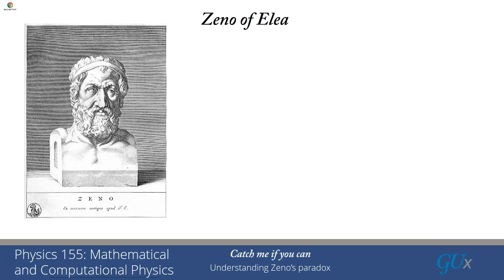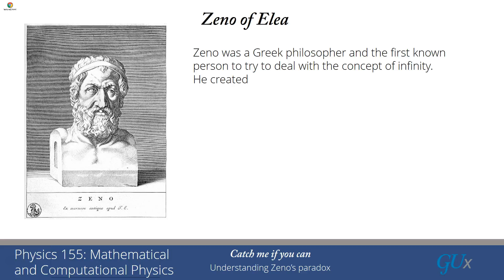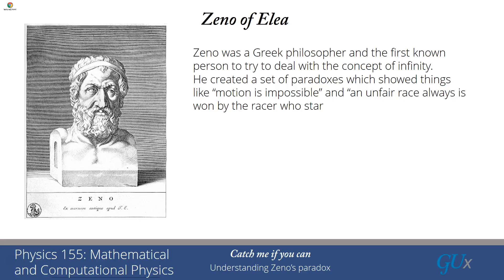Zeno of Elea was a Greek philosopher, and he was probably the first person to try to deal with the concept of infinity. He created a set of paradoxes which showed very odd things like motion is impossible and an unfair race always is won by the racer who starts with a head start.